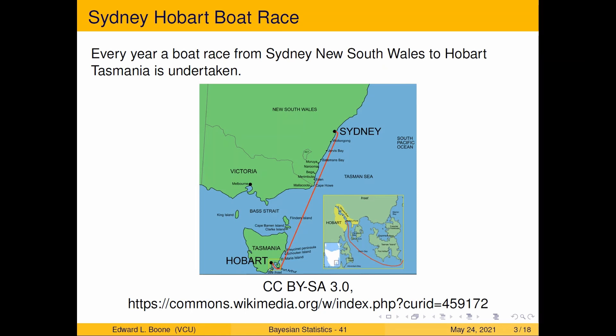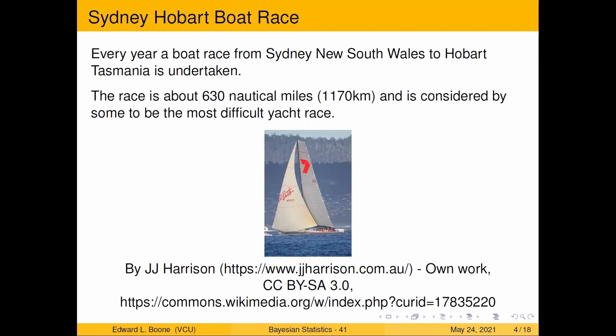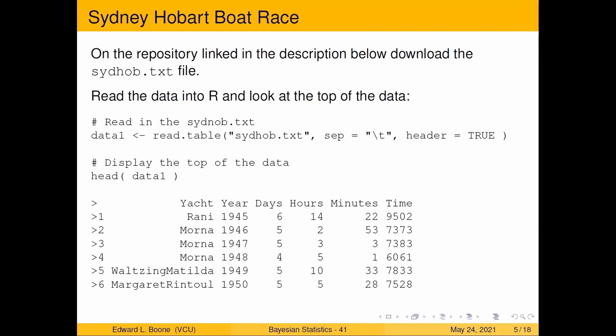And here's a picture of it and it's on Wikipedia if you want to get this picture. Just so you can see what happens. They go an incredible distance in boats. So the race is about 630 nautical miles or 1170 kilometers. And it's considered, some people say it's the most difficult yacht race. And here's a picture of a yacht and there's the information for it from Wikipedia. So I think this is the boat that wins the most, Wild Oats.